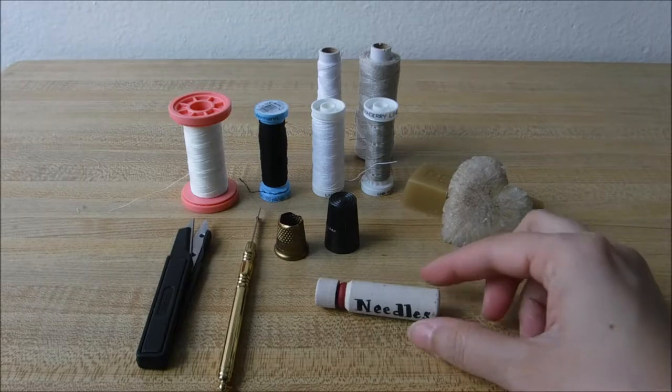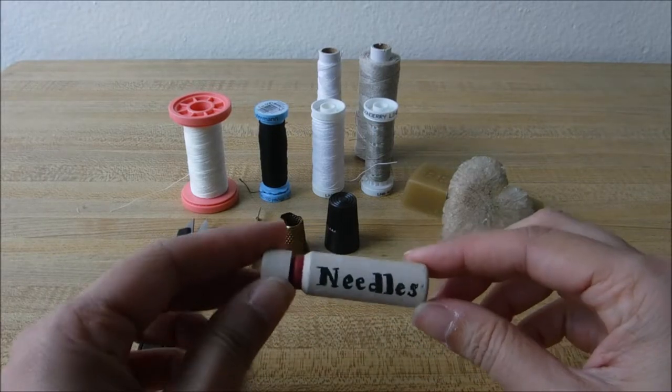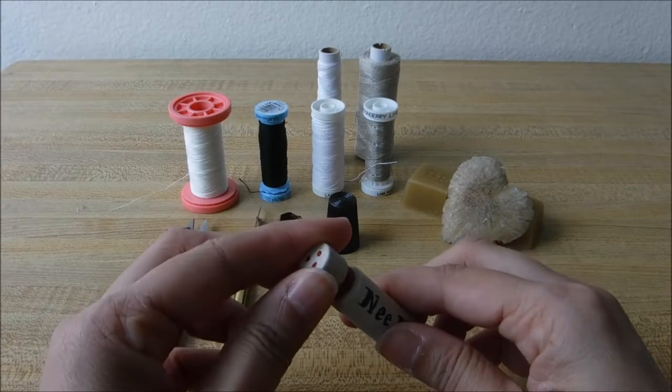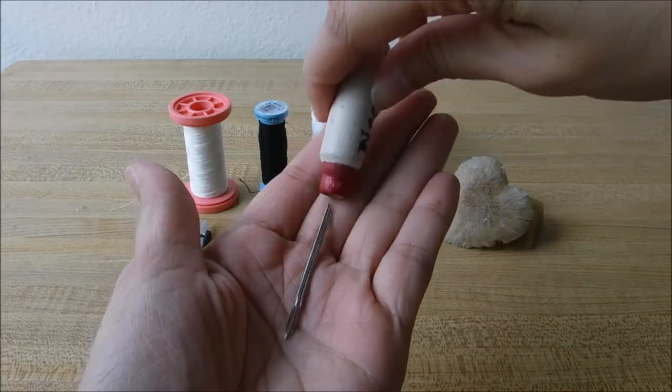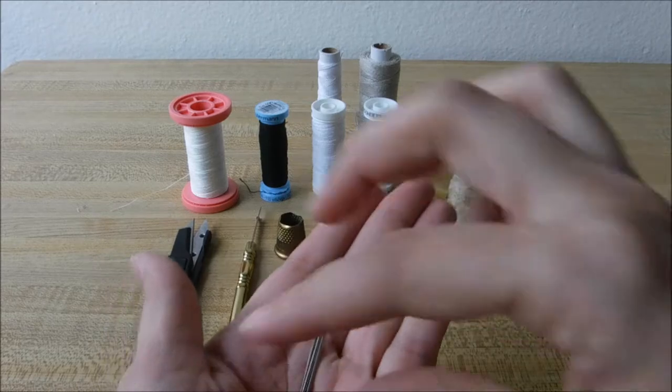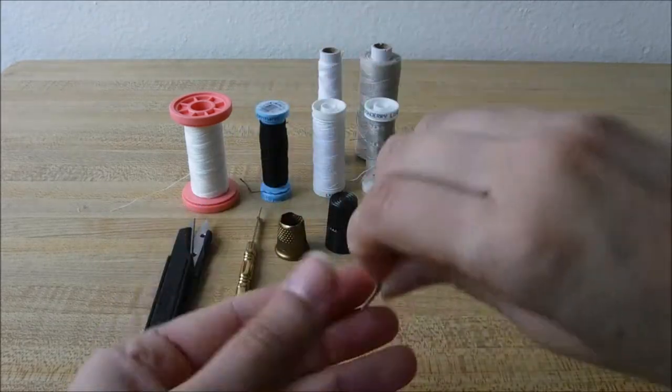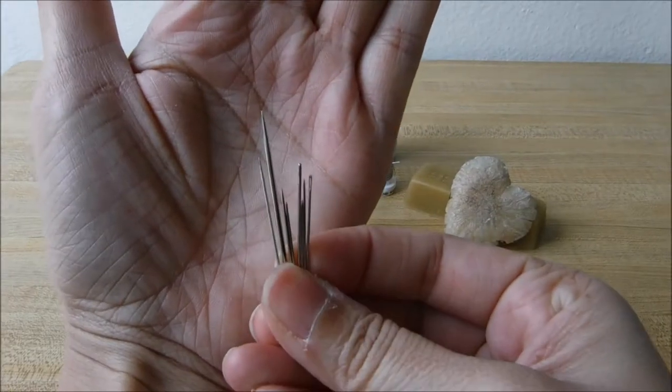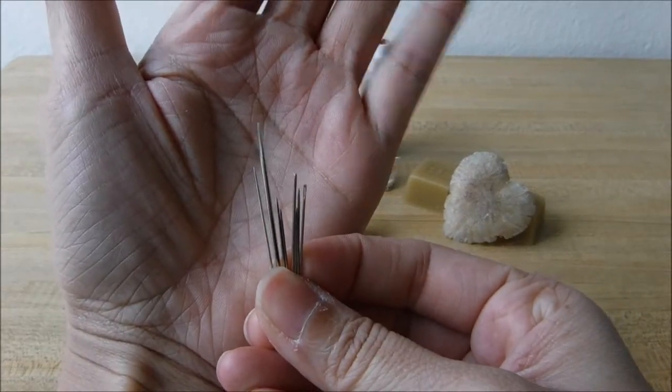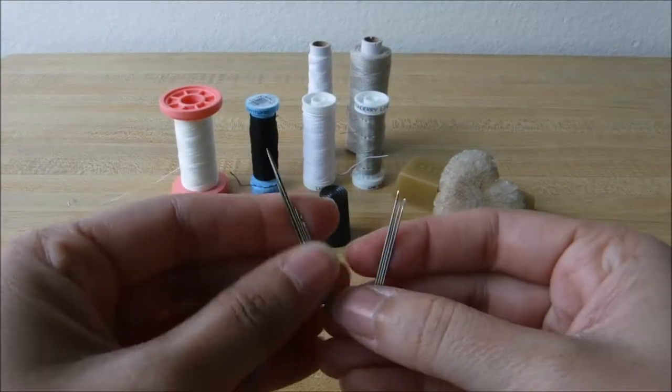First up, we have needles. Needles are extremely important. They pull your thread through your fabric, so it's always great to have them on hand. I keep mine in a little needle jar. I have assorted sizes—very long needles and very short needles. It's really great to have them on hand for any project.